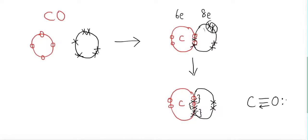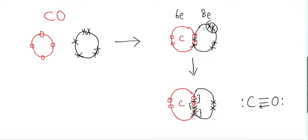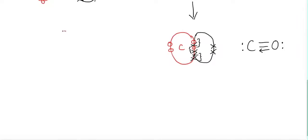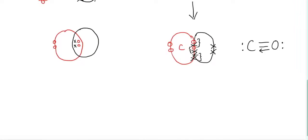In carbon monoxide, oxygen now has only one lone pair and carbon also has one lone pair. You can draw this structure alternatively: carbon has two electrons, oxygen makes a double covalent bond and one coordinate covalent bond with carbon, and retains one lone pair. In the coordinate covalent bond, both electrons come from the same atom.